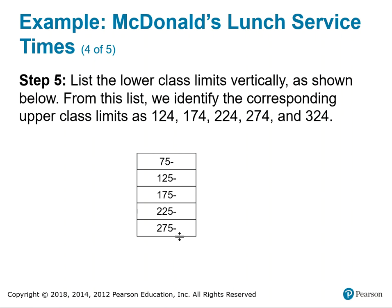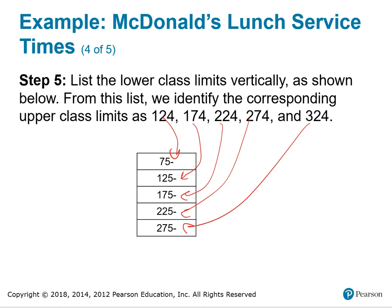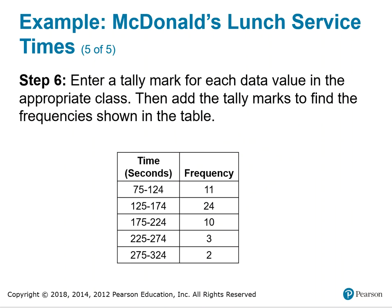From this list you can identify the upper class limits. The number that the first class ends before the second class begins would be 124, and the number that the second class ends before the third begins would be 174, and so on. These are the upper class limits for each of the five classes. Here you'll see the time in seconds for each class's lower and upper class limits, with the counts already done. We look for all data points between 75 and 124 inclusive, and the frequency indicates 11.